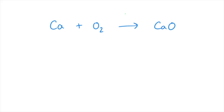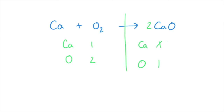So equation one, we've got calcium and oxygen — same on the other side. One calcium, two oxygens, one calcium, one oxygen. Two in front of the calcium oxide — make both changes straight away. Oxygens are now balanced. Two in front of the calcium and the equation is balanced.